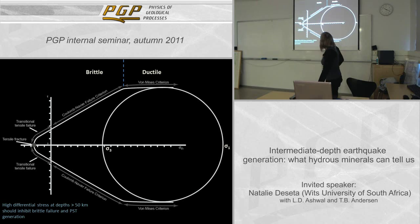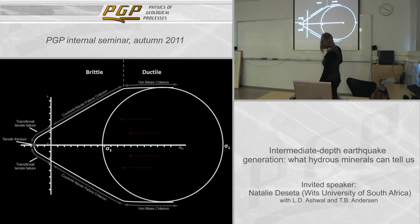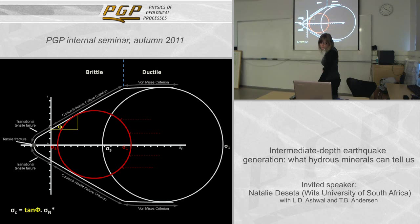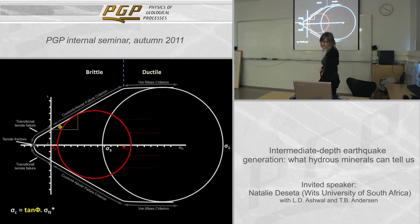There are two ways in which you can induce cohesion loss at high differential stresses. The first way is to move the Mohr circle to the failure envelope and bring it into the brittle field, by increasing pore fluid pressure and decreasing confining pressure to induce brittle failure. The second way is to bring the failure envelope to the Mohr circle by decreasing the coefficient of friction in the rock, weakening it and allowing it to fail more readily.